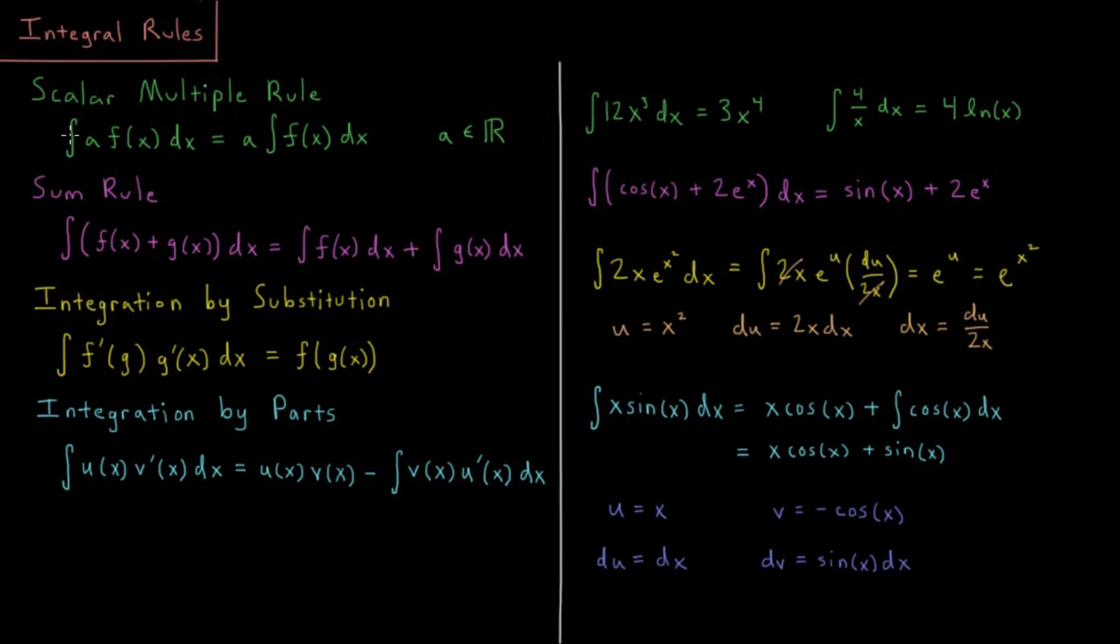When we have a constant times a function, the integral of a constant times a function is just the constant times the integral of that function. You can factor the constant out and take the integral of the function, providing this constant is some real number, although this works for complex numbers too.